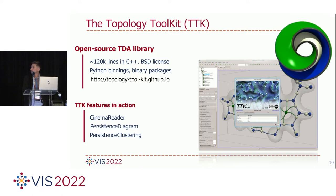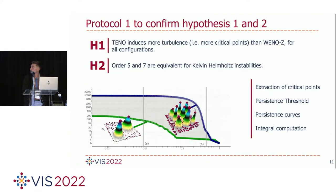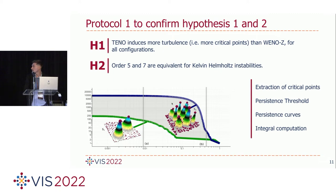With these different tools, I will perform three different protocols to analyze and compare the different numerical methods. The first protocol is to confirm hypotheses H1 and H2: that the TENO interpolation produces more vortices than the WENO interpolation, and that there is an independence of order between order 5 and order 7 when computing the Kelvin-Helmholtz instabilities. To set up this protocol, I need to use the extraction of critical points, the persistence thresholds, the persistence curve, and compute an integral difference between the two persistence curves.